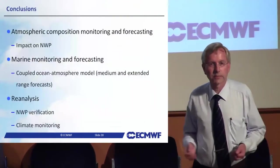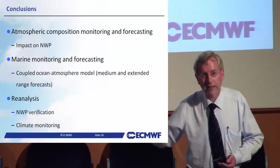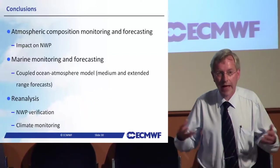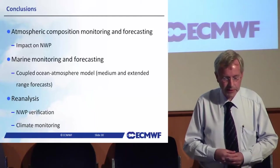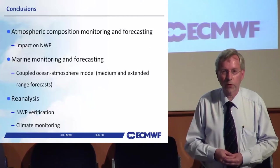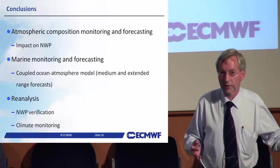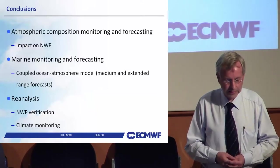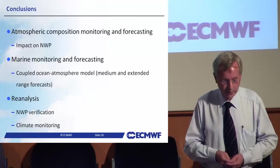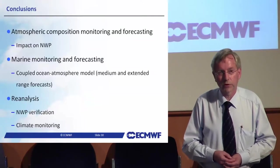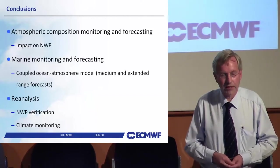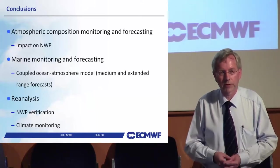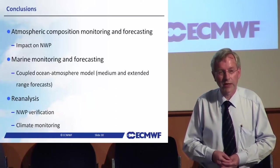To conclude, the three main areas of Earth system modelling where we are active today are: atmospheric composition, which has an impact on NWP; marine monitoring and forecasting with a coupled ocean-atmosphere model, important for medium, short, and extended-range forecasts; and reanalysis, both for verification and calibration of our forecasts and for climate monitoring for society at large. I firmly believe that to further develop our prediction system, we have to include better and better, more and more components of the Earth system. We have to continue to work in this direction for ECMWF to continue to be successful in medium-range weather prediction. Thank you.